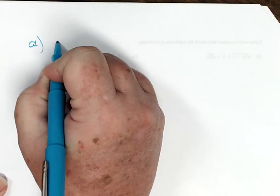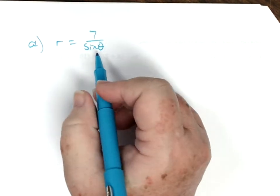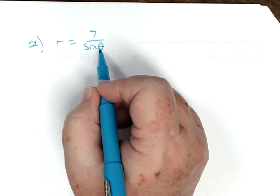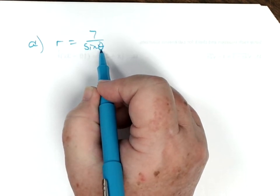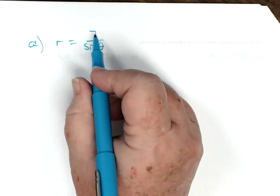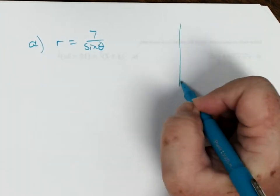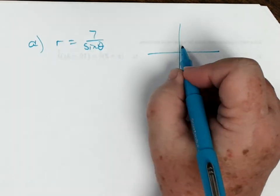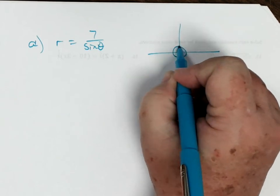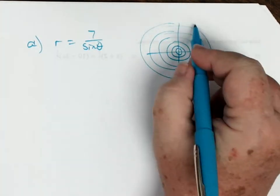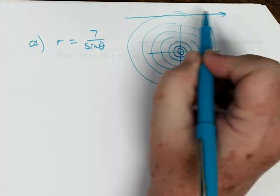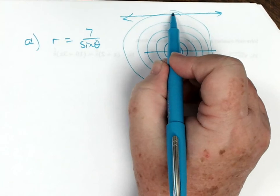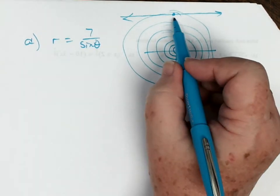So if we do a couple of examples, and I asked you to graph them, let's say for example that I had problem A: r equals 7 divided by sine of theta. Now I know that if it's divided by sine of theta, then I am looking at a horizontal line. That line exists 7 above the pole. So I would have 7 circles - 4, 5, 6, 7 - and it would just simply be the horizontal line that passes through the pi over 2 axis at 7.